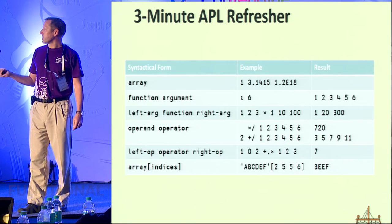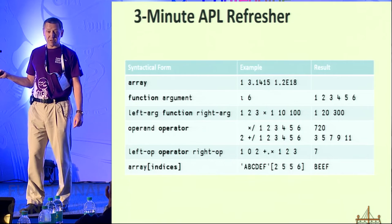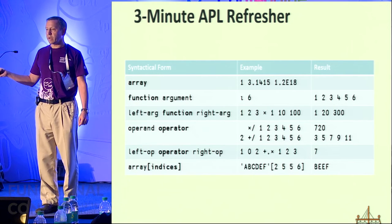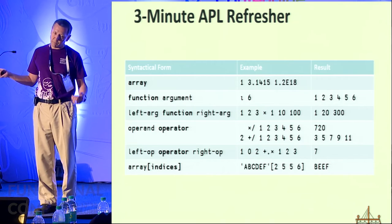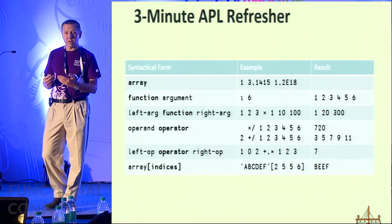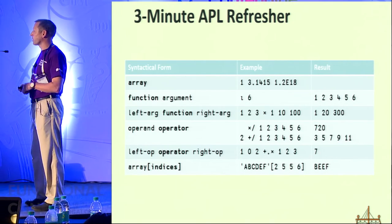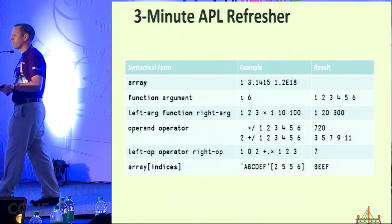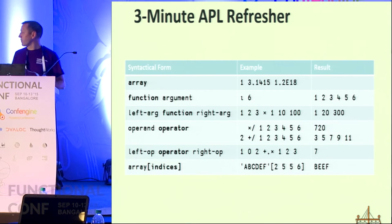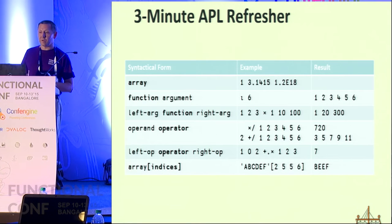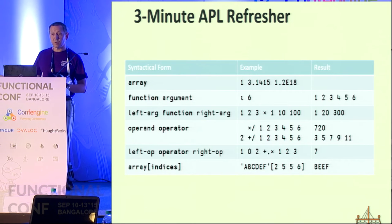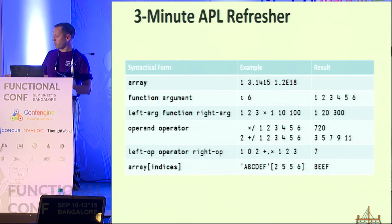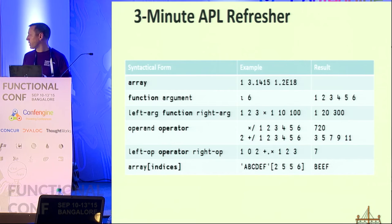This slash is an operator which takes multiplication as the left operand and produces times-reduction — so the product of all elements. A reduction with a number on the left gives a sliding window: this is a sum with window size 2 going through the array. All of these extend to higher-rank arrays as well, not just vectors. Then we have the inner product — vector product where you multiply elements and do a plus-reduction at the end. In APL you can index with an array and get a result with the same shape as the index array.